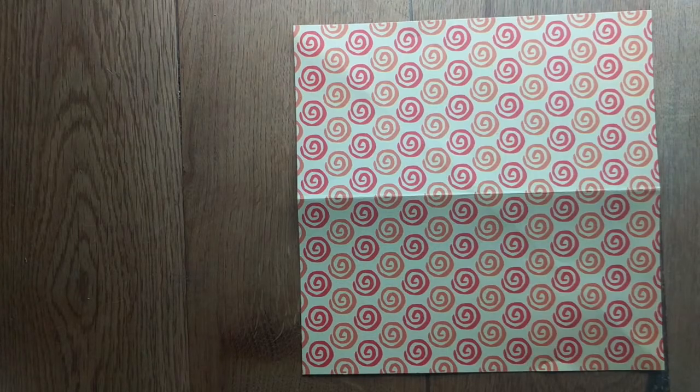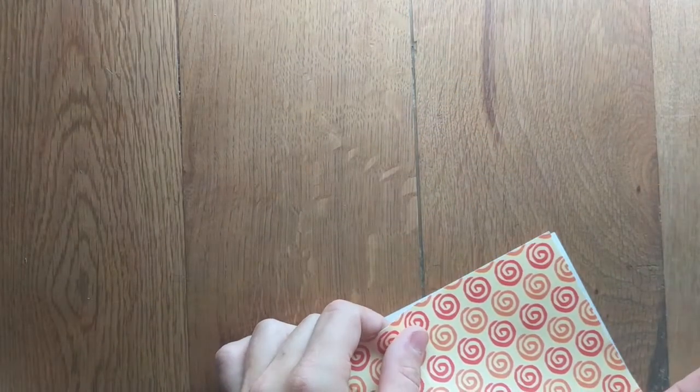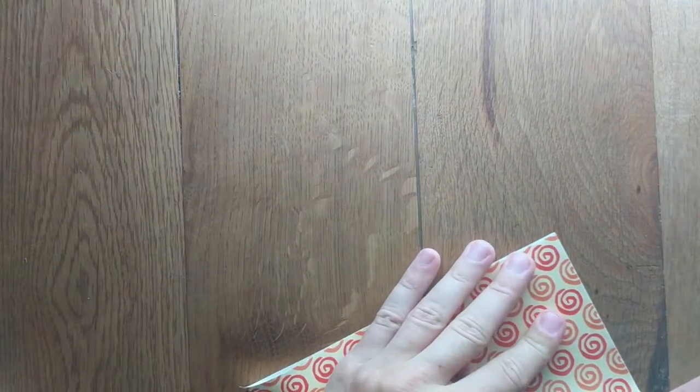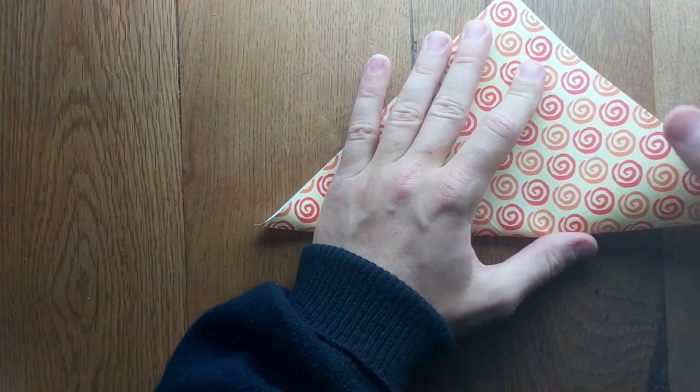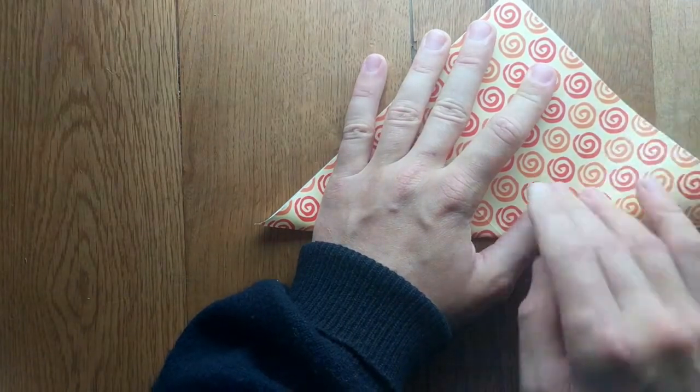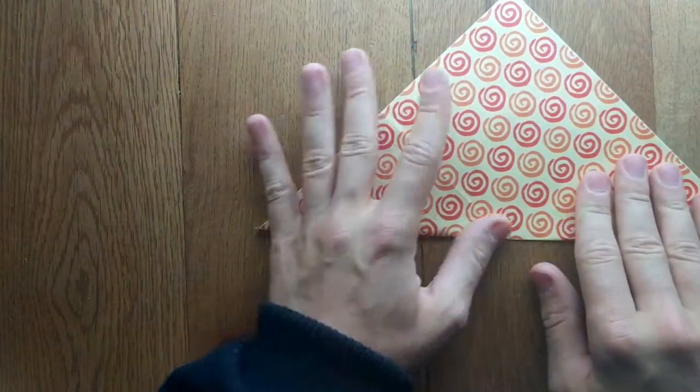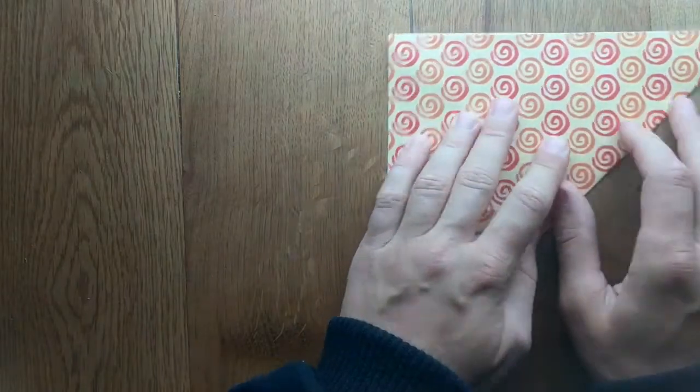So first things first, you want to do a diagonal fold, folding these two corners to make a triangle. Try and get it as neat as possible. It's not the end of the world if it's crooked. Let's try it again.